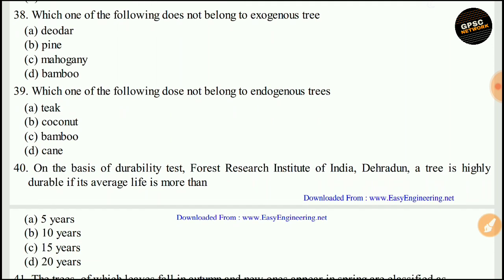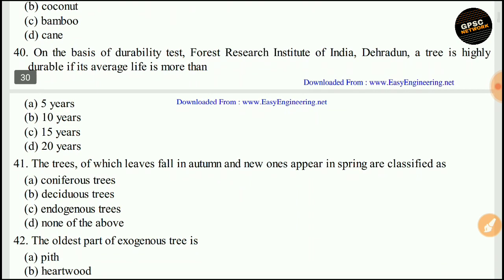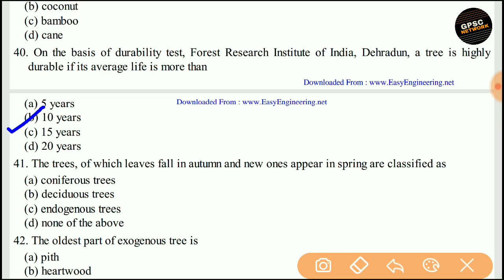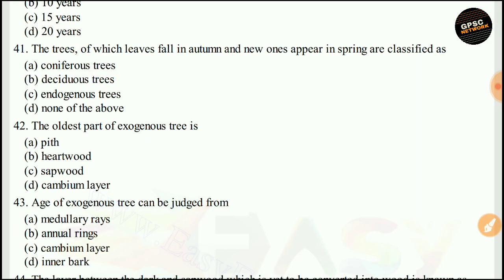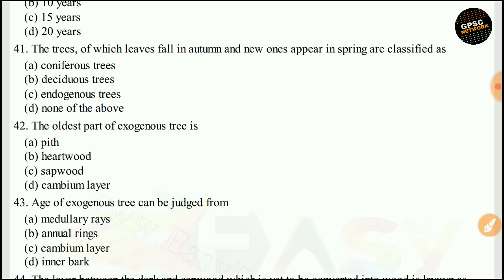Which one of the following does not belong to exogenous trees? The right answer is C — mahogany. Which one of the following does not belong to endogenous trees? The right answer is C — bamboo. On the basis of the durability test by the Forest Research Institute of India, Dehradun, a tree is of highest durability if its average life is more than 10 years. The right answer is B.